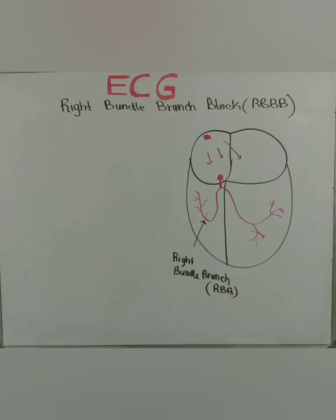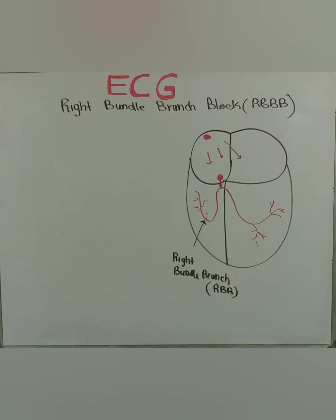In order to understand the concept of the right bundle branch block, which is RBBB, the first point is to understand what the right bundle branch is. The right bundle branch is a branch on the right side, and it belongs to the bundle part of the conduction system.